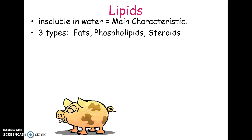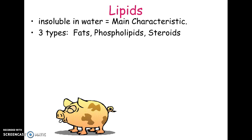We're going to talk about three groups of lipids. The first one is fats and oils. The second one is phospholipids, which we'll talk about more in upcoming chapters because phospholipids are what the cell membrane is made of. The third class of lipids are steroids — and there are lots of natural steroids; many of the hormones in your body are steroids.